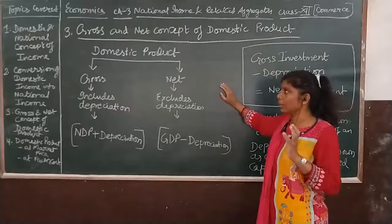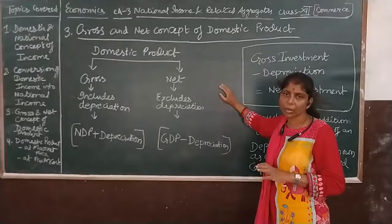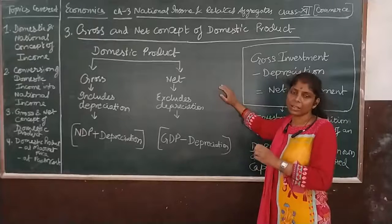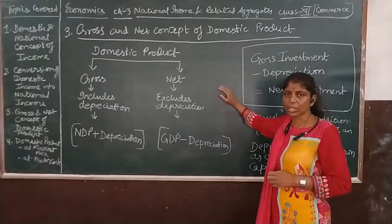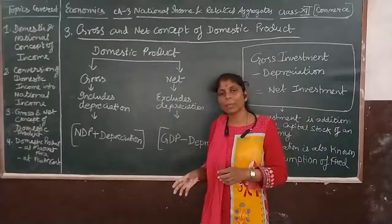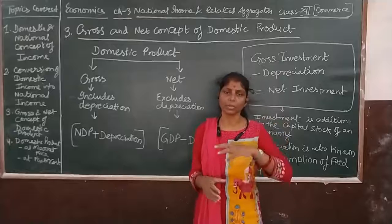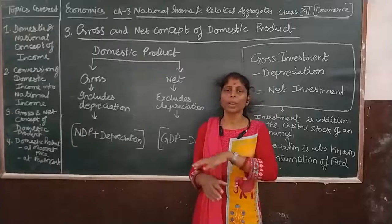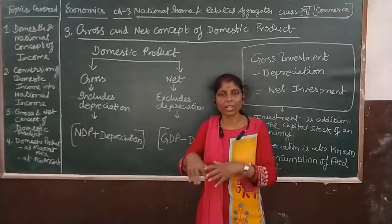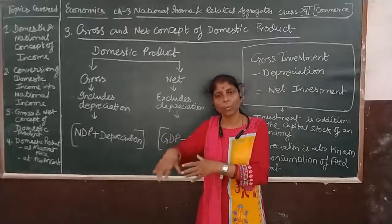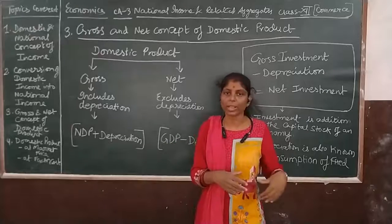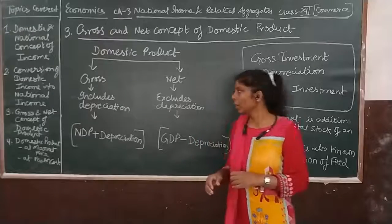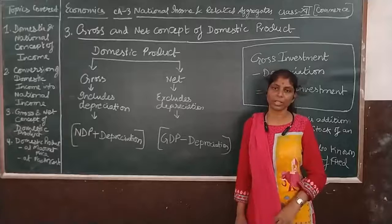The formula is: Gross Domestic Product minus depreciation equals Net Domestic Product. Gross Domestic Income minus depreciation equals Net Domestic Income. Income and product — from the factor income point of view and the production point of view — they are identical. The difference is not in value but in the approach of calculation.